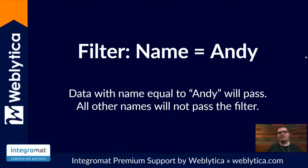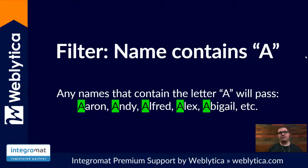For example, let's say we have a name in our data and we want to filter where name equals Andy. That means only data with the name equal to Andy will pass, and all other names will not pass your filter and continue down your scenario. Another example: if we're filtering for names that contain the capital A — case is sensitive in your filters — names like Aaron, Andy, Alfred, Alex, and Abigail all have capital A's and those will pass a filter where you're looking for name contains A.